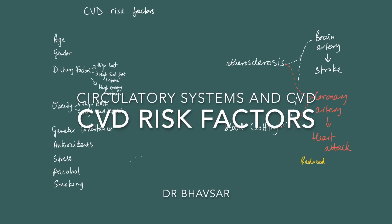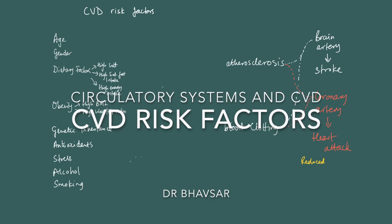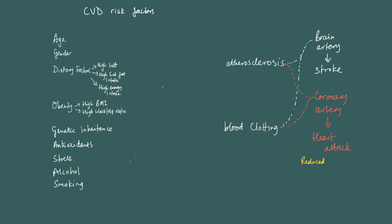Let's now talk about the cardiovascular disease risk factors. You should be coming into this having reviewed how circulatory systems work and how atherosclerosis and blood clotting happen. Now we look at the different lifestyle or genetic factors that can increase the chance of cardiovascular disease.